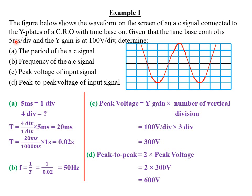We are given the time base control of five milliseconds per division. The number of divisions making one complete wave is one, two, three, four. So if five milliseconds equals one division, then four divisions give the period: four divided by one, multiplied by five milliseconds, which equals 20 milliseconds. Converting to SI units — since 1000 milliseconds equals one second — 20 milliseconds equals 0.02 seconds as the period.